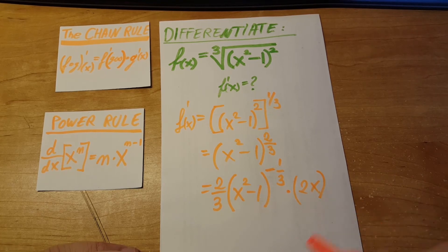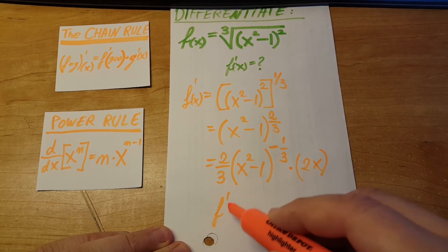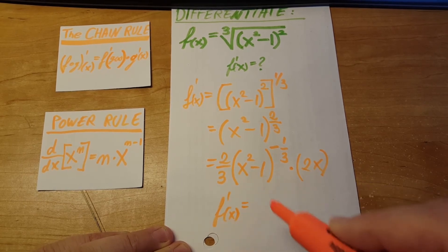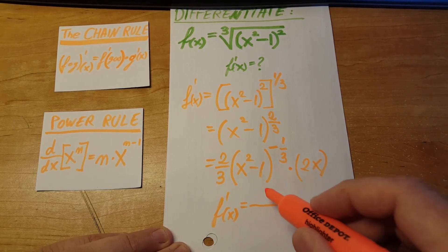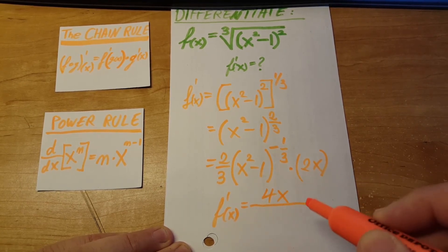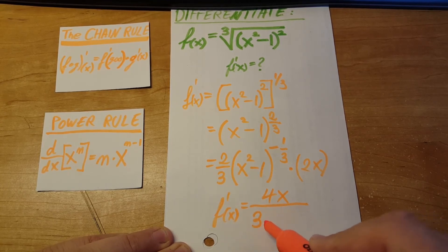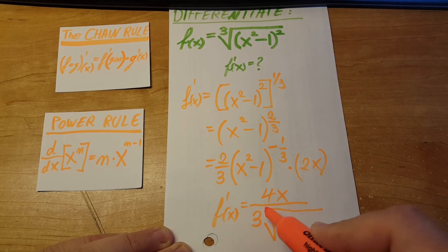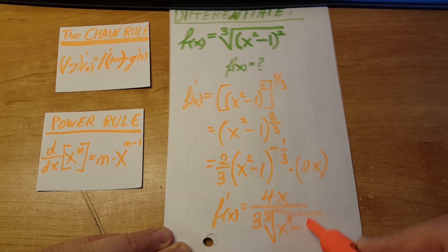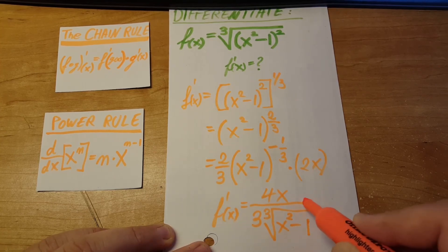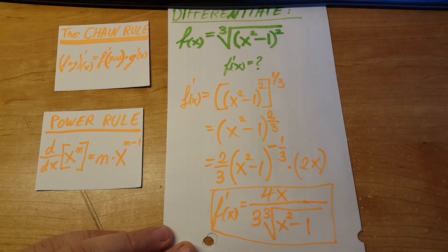And let's write it in a prettier format. And this is going to turn into a fraction. So we're going to have four x on top. On the bottom, we're going to have three times the cube root. And under it, we're going to have x square minus one. There you go. And that's our answer.